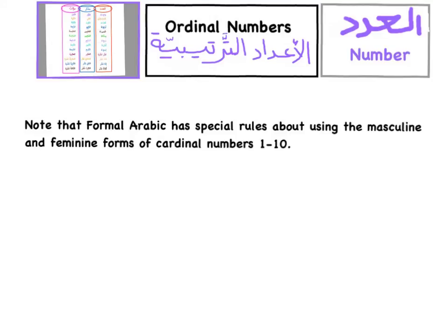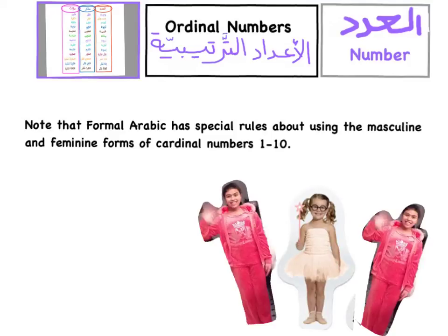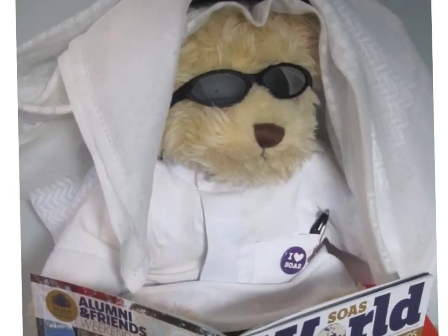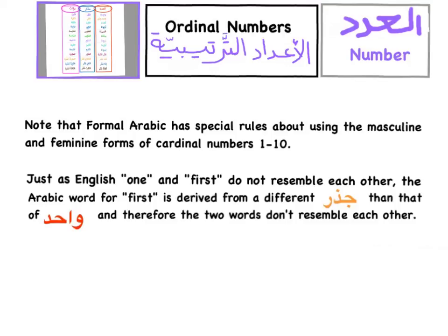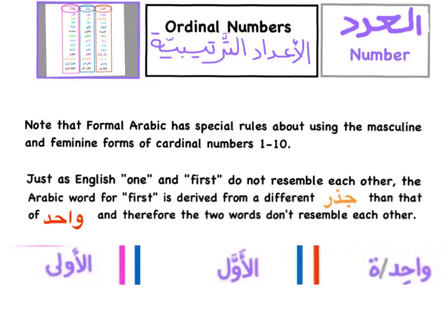Note that formal Arabic has special rules about using the masculine and feminine forms of cardinal numbers 1 to 10. The rule is that the numbers have to agree with the gender of the noun. For example, we use ثلاثة instead of ثلاث because بنت is a feminine noun. And if you talk about bears: دب واحد, دبان, ثلاثة دباب, etc. Just as in English 'one' and 'first' do not resemble each other, in Arabic we say واحد and الأول. The Arabic word for 'first' is derived from a different جذر than واحد, so the two words don't resemble each other. واحد — number one. الأول — the first. الأولى — the first for feminine.